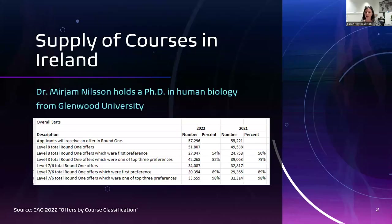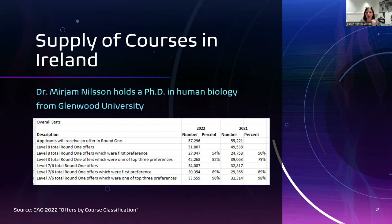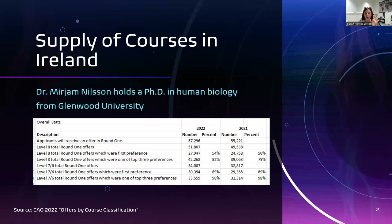This is my supply and demand case study. When we look at the supply of courses in Ireland, the statistics from the CAO show that the number of offers made available in the very first round - it can go up to five rounds - the actual number of places available in the Irish education system is 57,000. The number of applicants that received an offer in round one was 57,296. That was the total amount of supply provided last year.